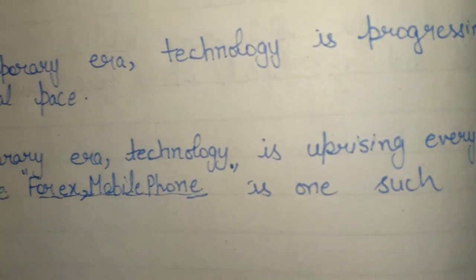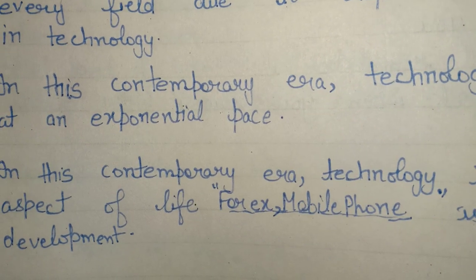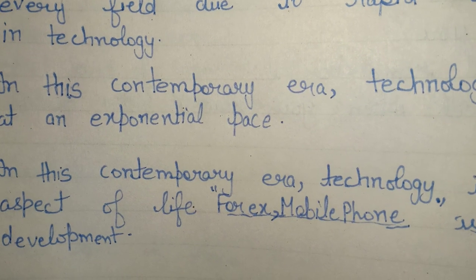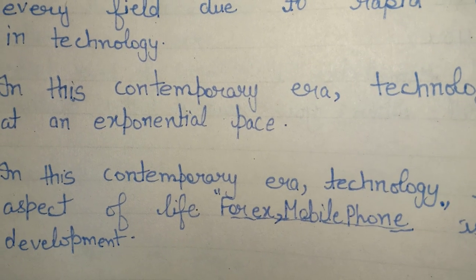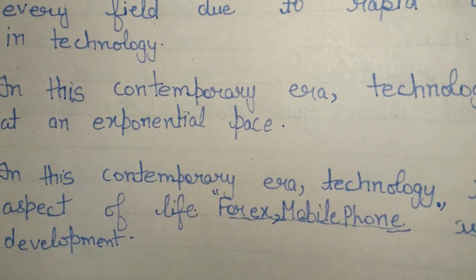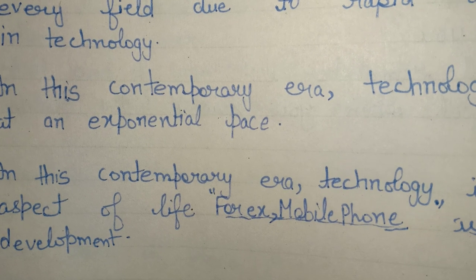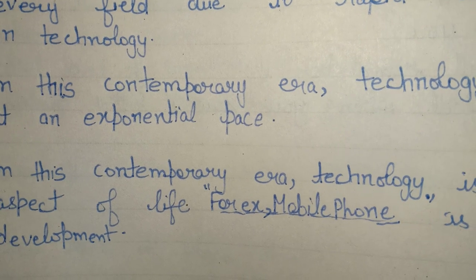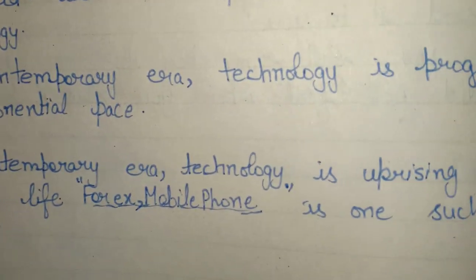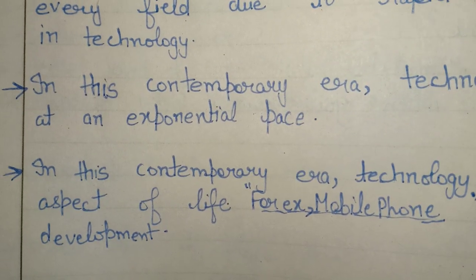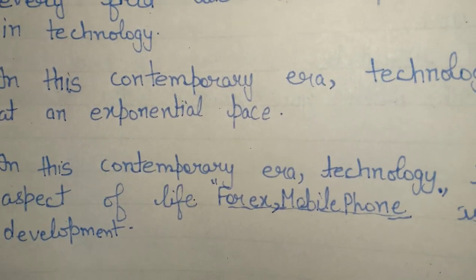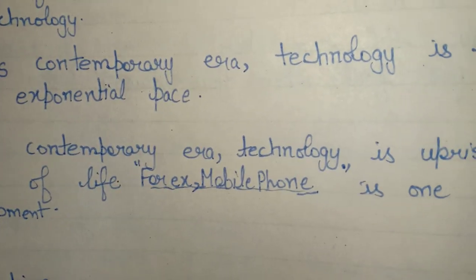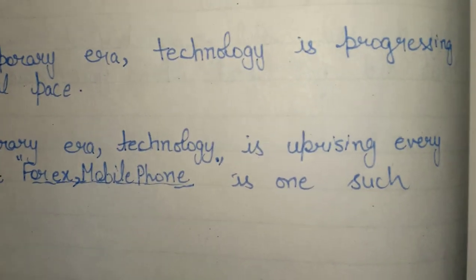The next hook line is: 'In this contemporary era, technology is uprising every aspect of life.' Guys, I have left a blank here — you can fill in an example based on your specific topic. For example, if your topic is about mobile phones, you can write: 'In this contemporary era, technology is uprising every aspect of life and mobile phone is one such development.'